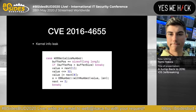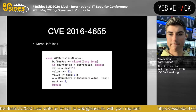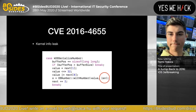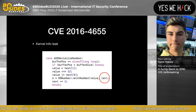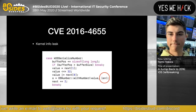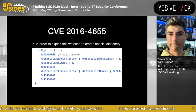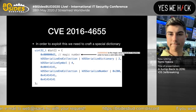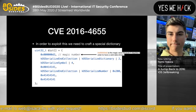This is the kernel info leak, and it's really simple. A function forgets to check the length variable, so we can pass an arbitrary number. When we read back the result we'll leak some kernel stack data. To exploit this we need to craft a special dictionary.